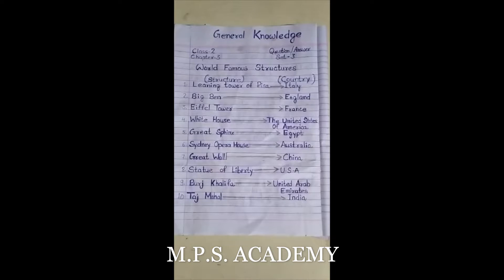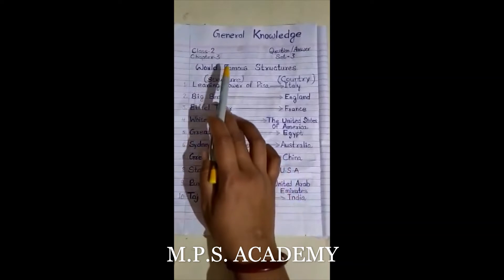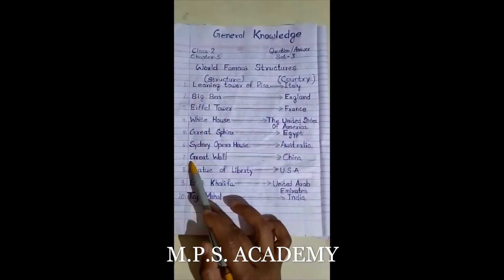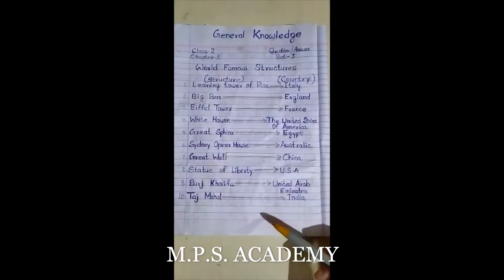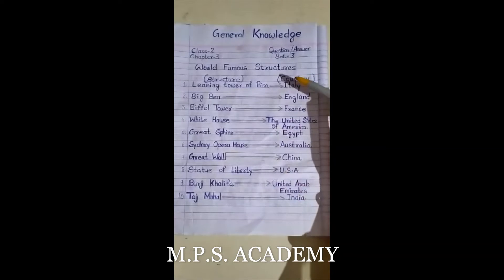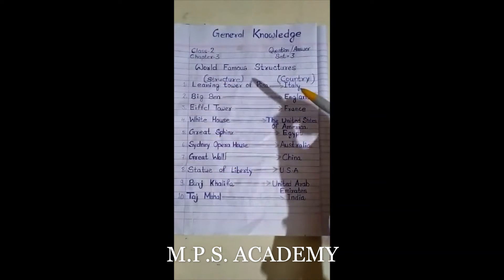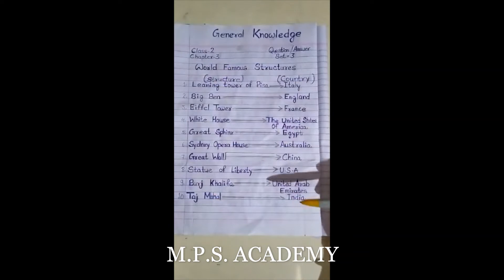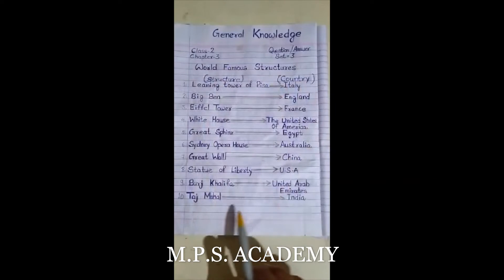Hello students, I welcome you all in class of GK and this class is for class 2. Here we'll discuss question answer set 3. Earlier we have discussed set 1 and 2 which were based on chapter 1 and 2 respectively. This is set 3 which is based on chapter 3, and 7 points are from the chapter and 3 points I have added to boost your knowledge. This set is in the form of match the columns — in this column structures are given and in this column the countries where these structures are situated. So let's begin.